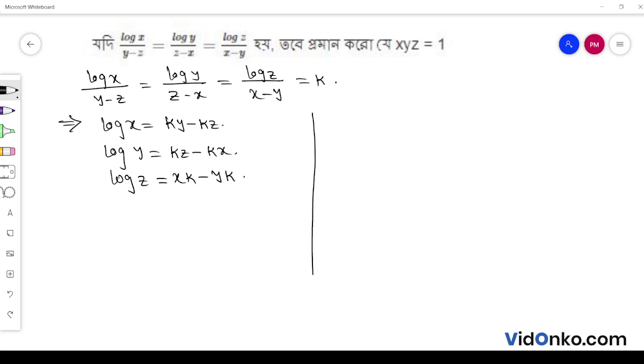Now we need to find log xyz. Log x plus log y plus log z. Using the property that log a plus log b plus log c equals log abc.